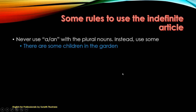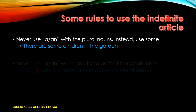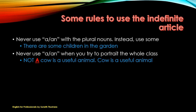Some rules to use the indefinite article. Never use A or AN with a plural noun — instead use 'some.' For example: 'There are some children in the garden.' Don't say 'there are a children in the garden.' You can use 'some,' or you can omit it entirely: 'There are children in the garden.' Also, never use A or AN when you want to represent the whole class. Don't say 'a cow is a useful animal' — say 'the cow is a useful animal,' because 'a cow' means a particular cow, while 'the cow' means the whole species.